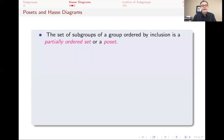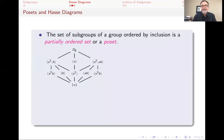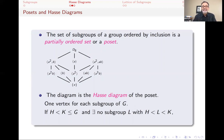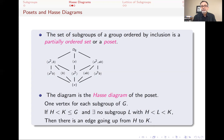To summarize: the set of subgroups of a group, ordered by inclusion, is called a partially ordered set or poset. The Hasse diagram has one vertex for each subgroup of G. If H is a subgroup of K and K covers H — meaning there's no subgroup L strictly between H and K — then we put an edge going up from H to K. I won't spend too much time on posets here; I urge you to look at my combinatorics lectures on posets for an expansive treatment.